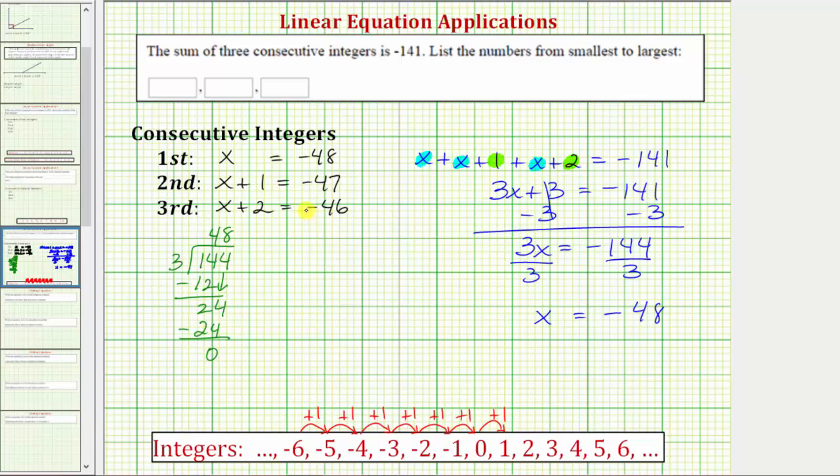These are in order from least to greatest, or smallest to largest. So our list is negative forty-eight, negative forty-seven, and negative forty-six. The sum of these three consecutive integers is negative one hundred forty-one. I hope you found this helpful.